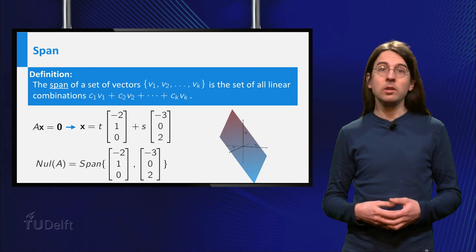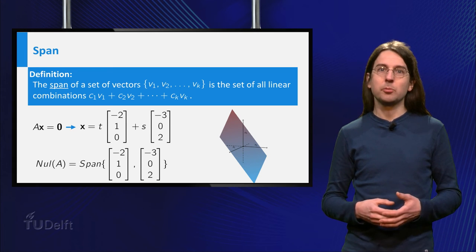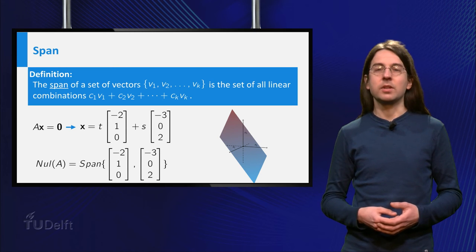The set of all linear combinations of a set of vectors, their span, satisfies the superposition principle as well, and is therefore a linear subspace itself.